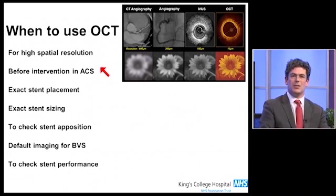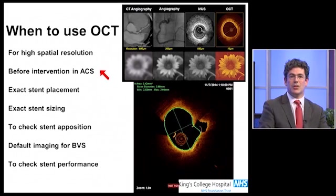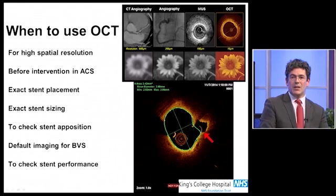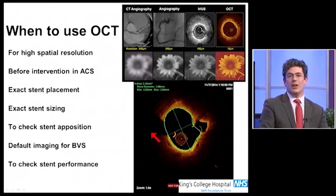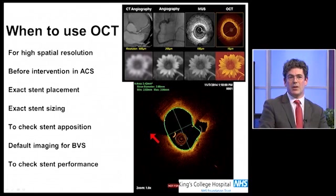Once you've made a diagnosis, once you've seen the pathology, you then have to make a treatment decision. You've seen the plaque rupture — this is the type of image that you can get very frequently. You look at your vessel, you look at where the pathology is, and you have to then decide how you're going to treat it.